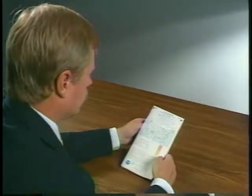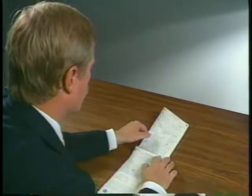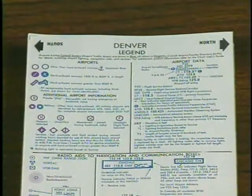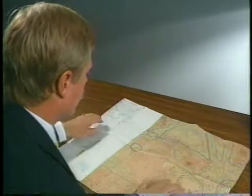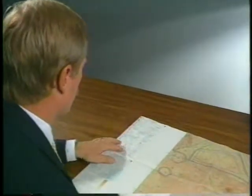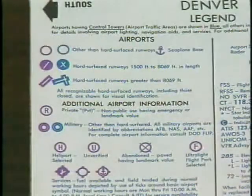Now let's look at how to interpret the information on the chart. As you unfold the map, you will notice the legend on the back panel. At the top of each panel are the words north and south, indicating the chart coverage area is divided into north and south regions displayed on different sides. Of primary importance are the airport symbols.